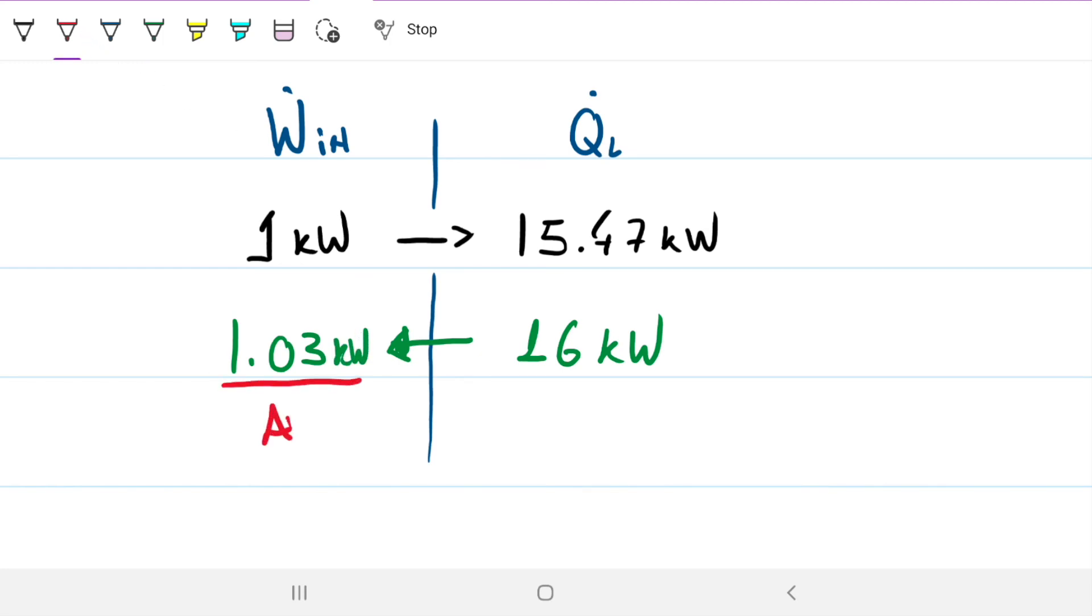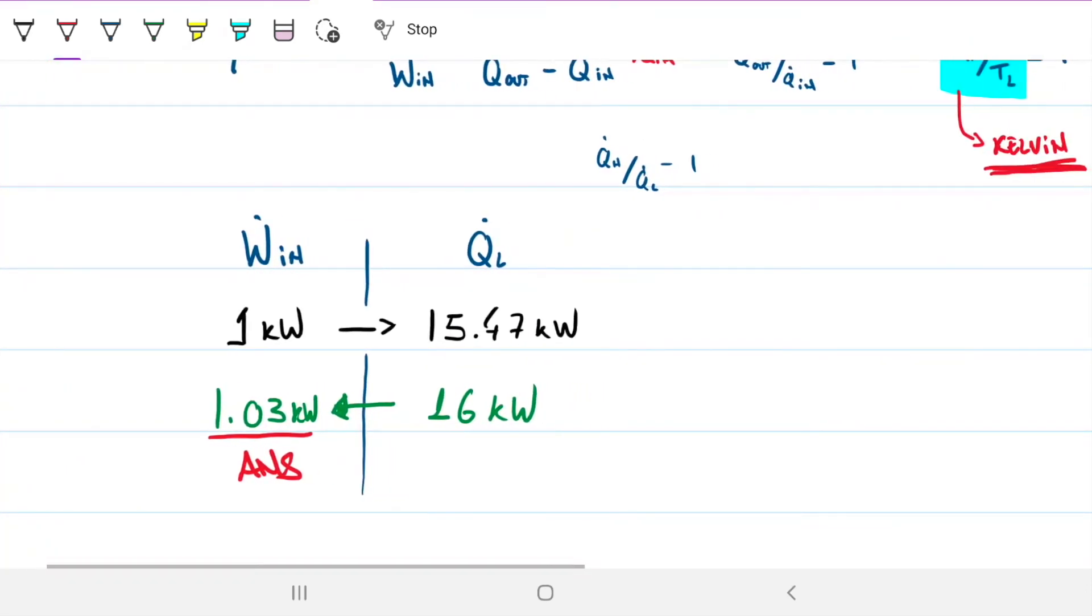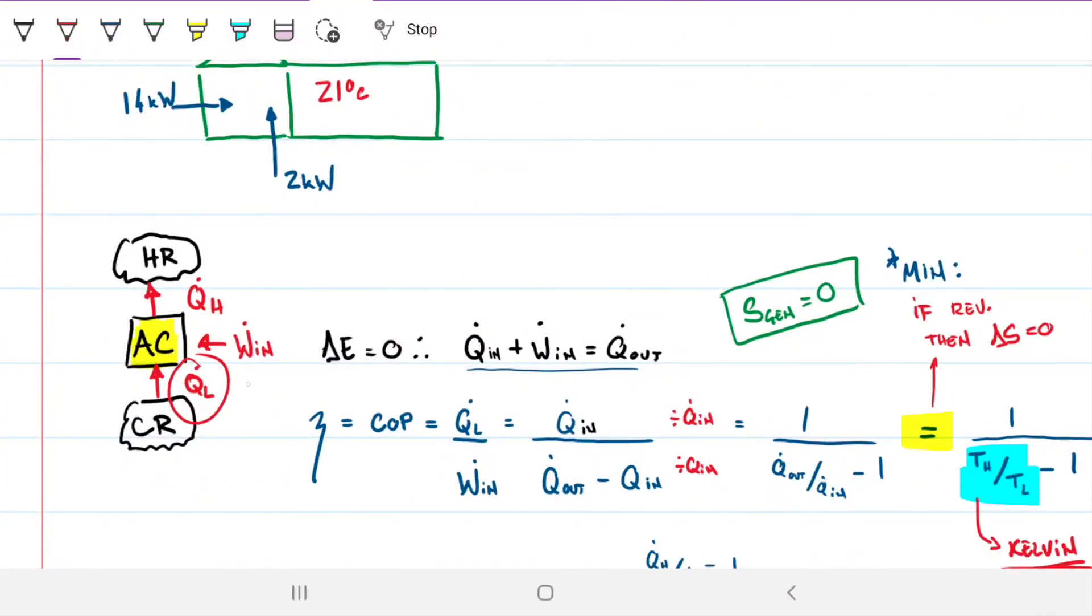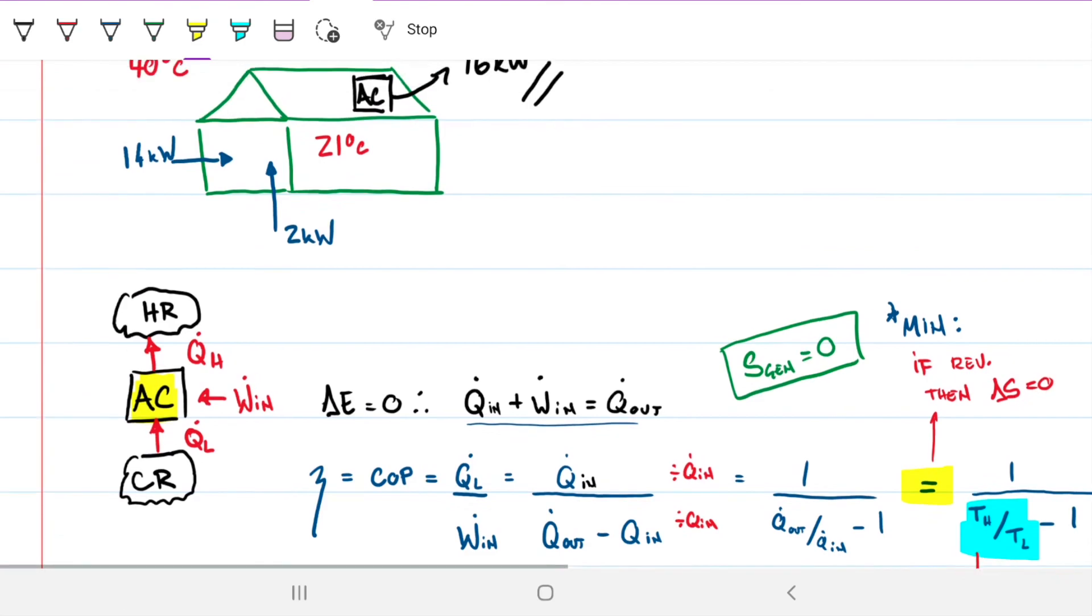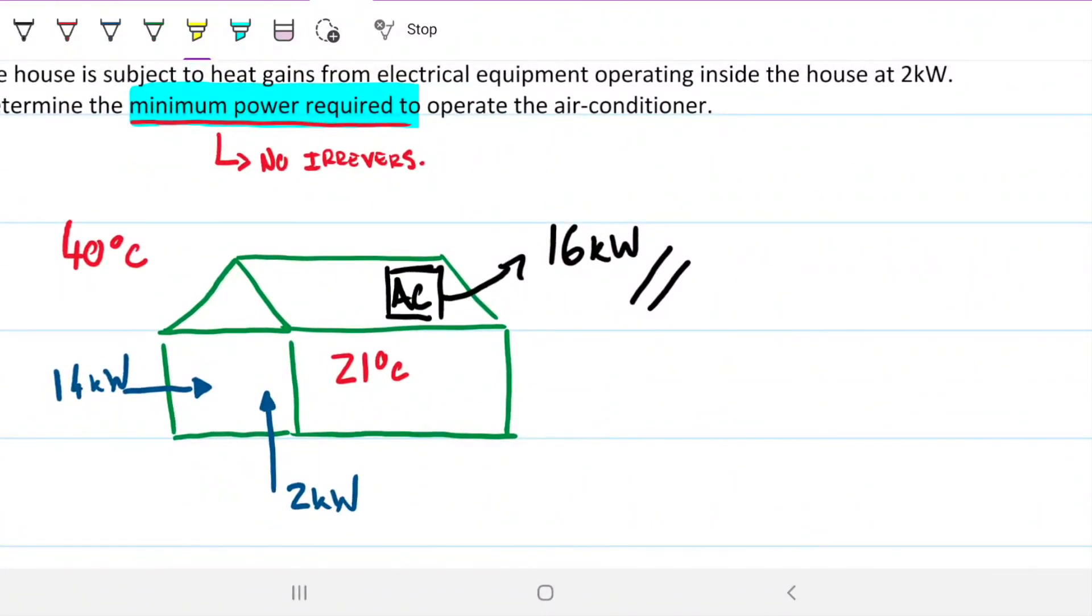So if I put 1.03 kilowatts into this AC, then it's going to give me 16 kilowatts out in the Q_L. That's what the coefficient of performance is. That's what the efficiency of our AC is. So I hope this was useful for you guys. I hope we were able to keep our house nice and cold. Don't forget that this is the minimum power required. If we have any irreversibilities, we need to put more than the 1.03 kilowatts, depending on how much irreversibilities we have, how much entropy we're generating in this process. So this is the bare minimum required if we have a completely reversible isentropic transformation happening there.